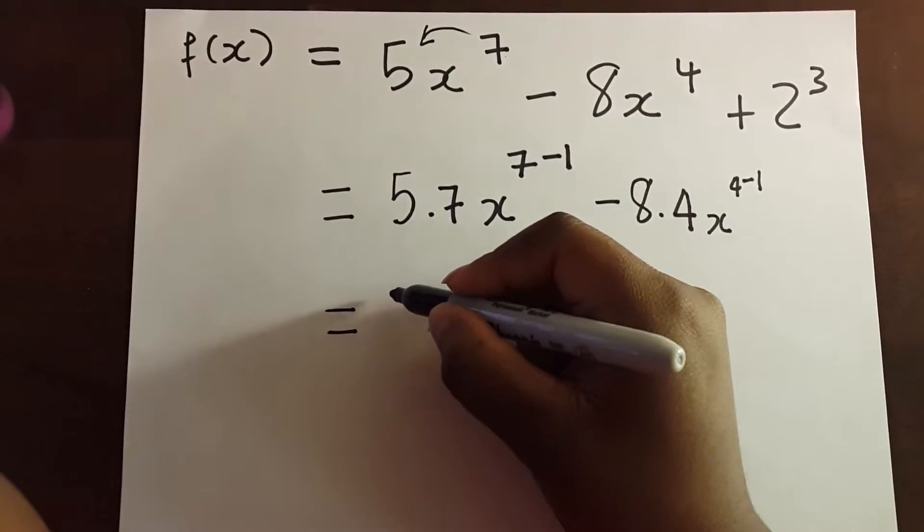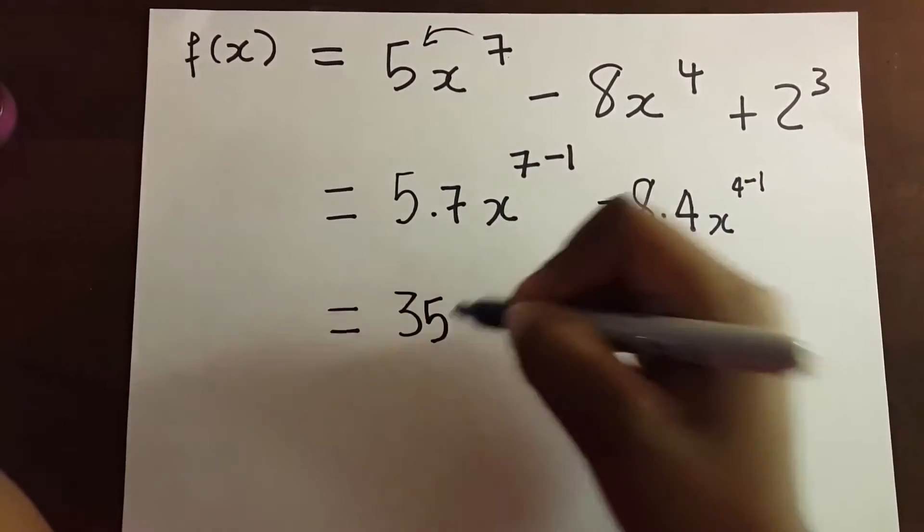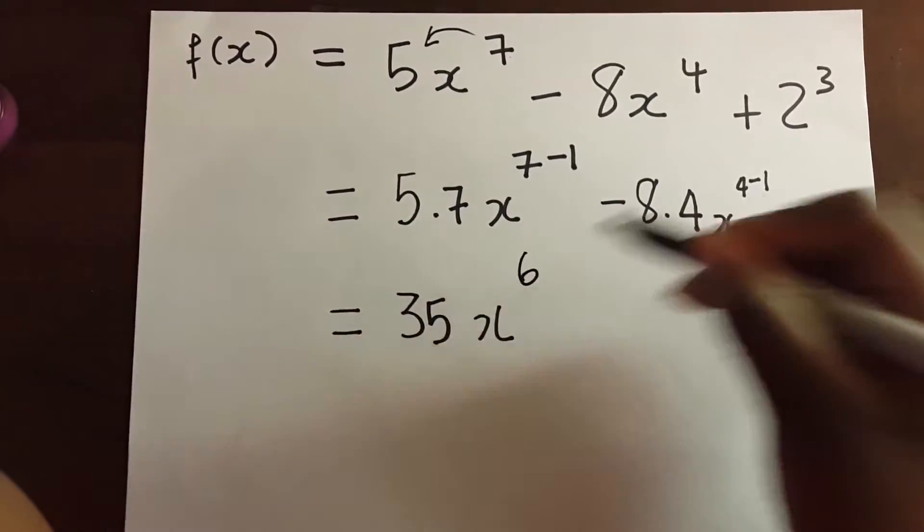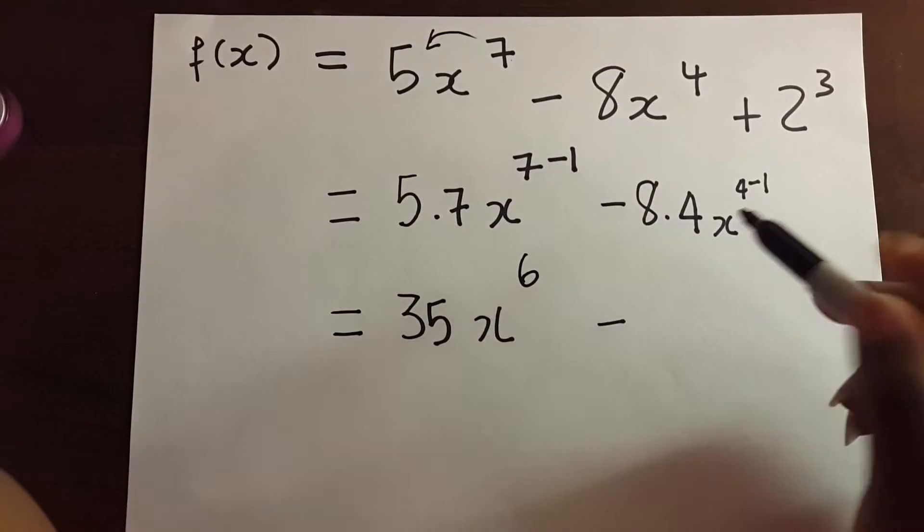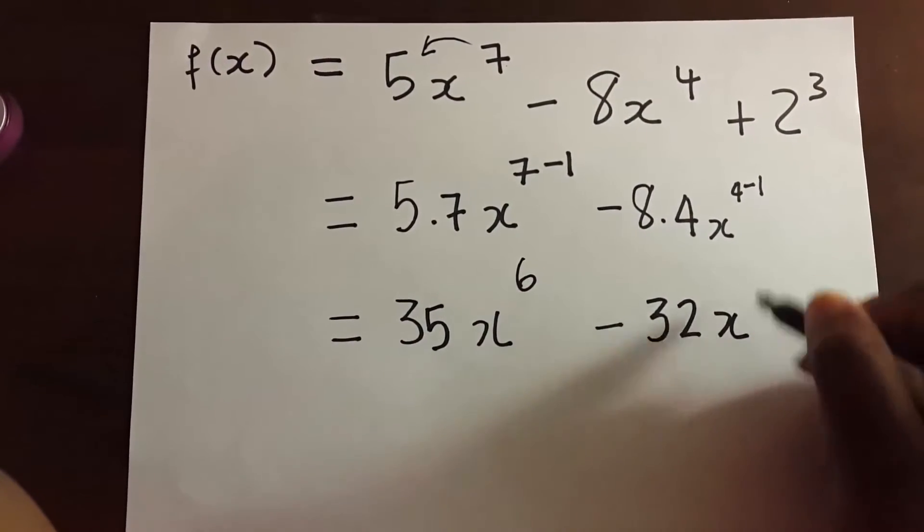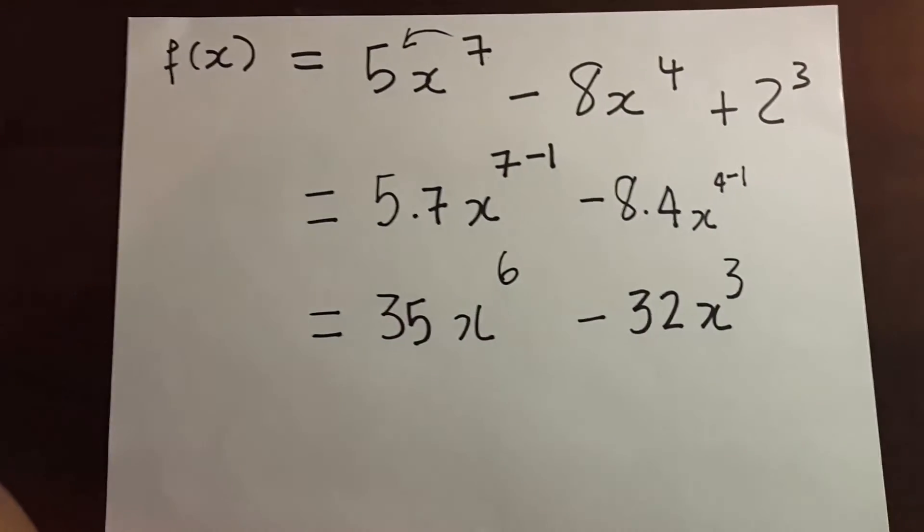Then 5 times 7 is 35, and x^6, since 7 minus 1 is 6. Minus 8 multiplied by 4 is 32, and then x^3. So that's your answer.